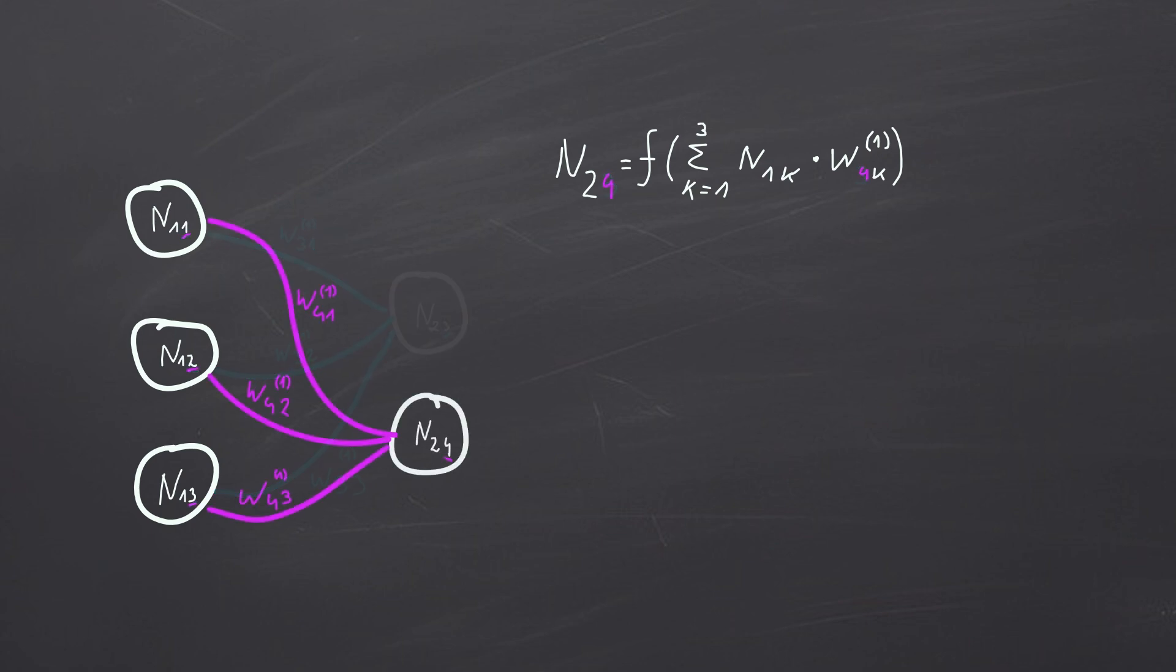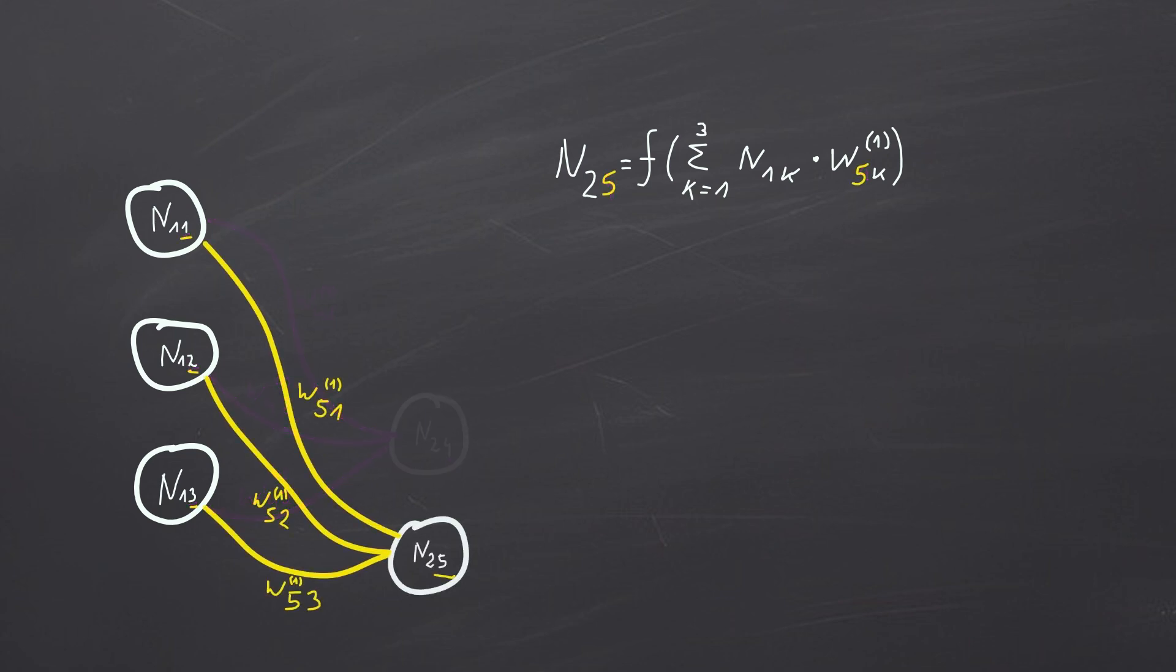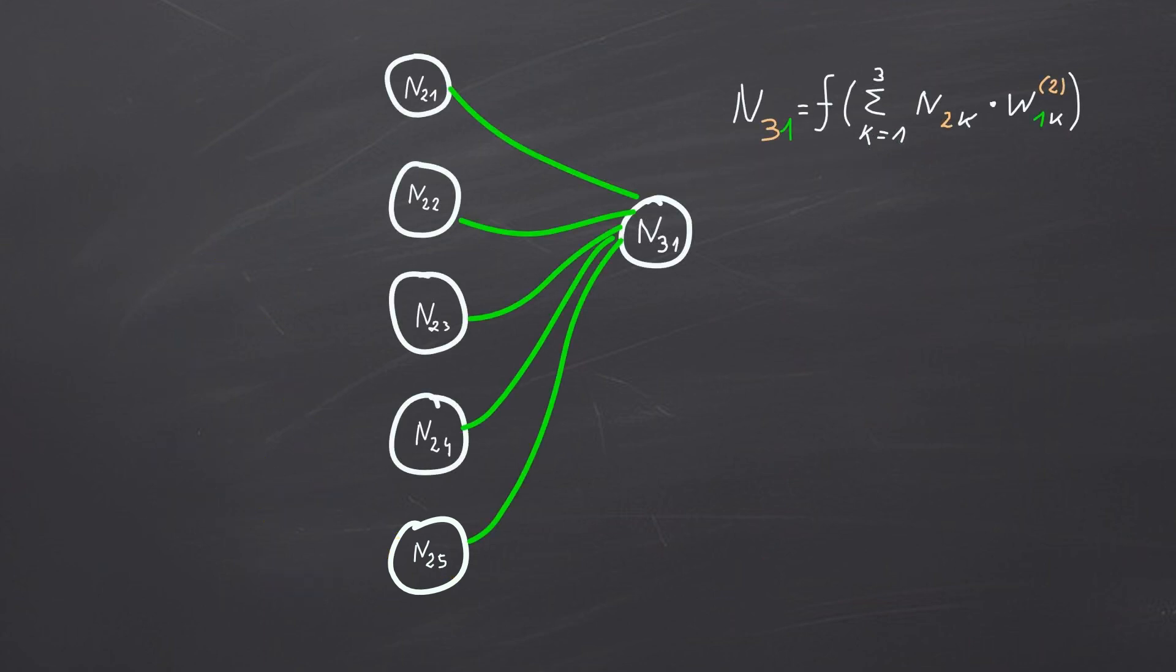This process is repeated for every neuron in the current layer. It is important to note that while all neurons in the same layer receive the same input, what differentiates them are their respective weights. Once all neurons in a layer have been processed, we move to the next layer, repeating the same steps. This time we use the output of the previous layer as the input for the current one, along with a new set of weights. The orange numbers in the formula highlight what changed between layers, particularly the weights.